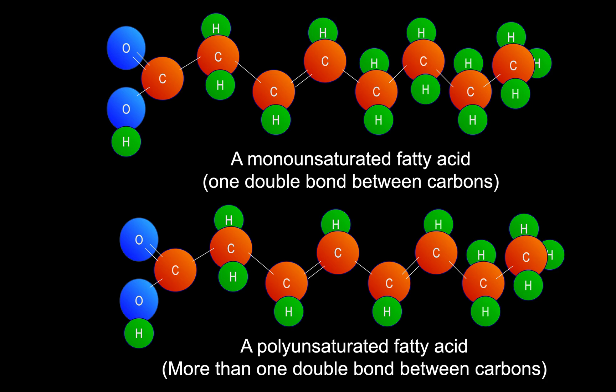Contrast that with these two unsaturated fatty acids. At the top you have a monounsaturated fatty acid, because there is one double bond between the carbons in the chain — this is not counting the double bond in the carboxyl group on the left-hand side. At the bottom we have polyunsaturated fatty acids, meaning two or more double bonds between the carbons in the chain. Again, we are not counting the double bond that is in the carboxyl group.